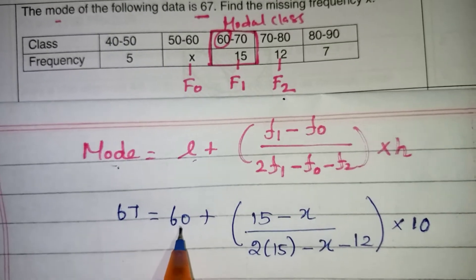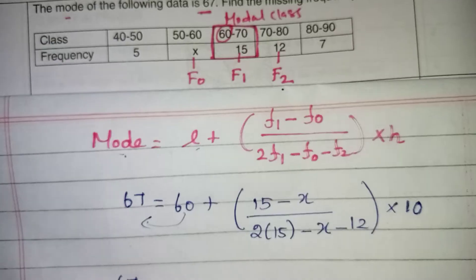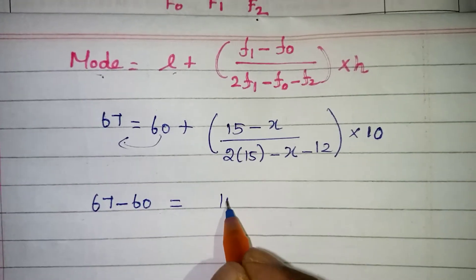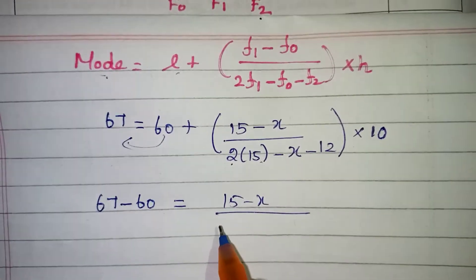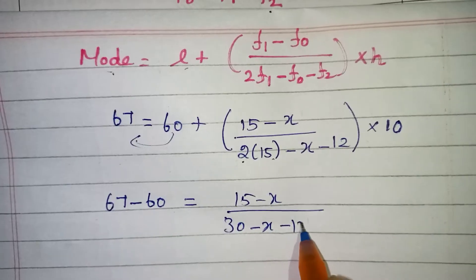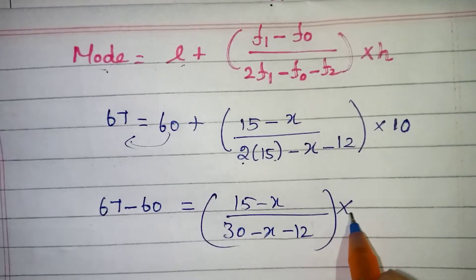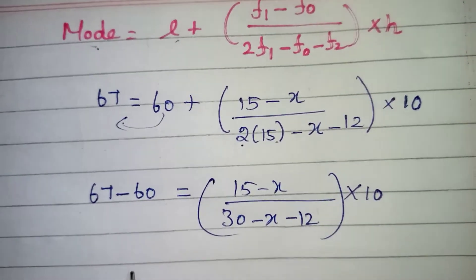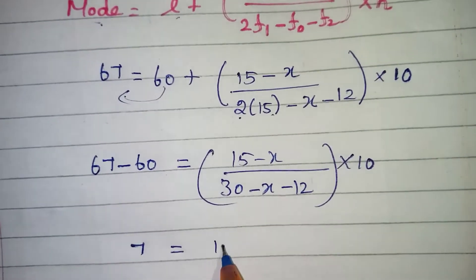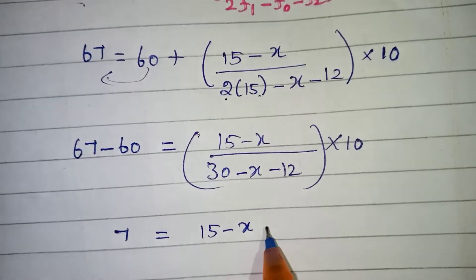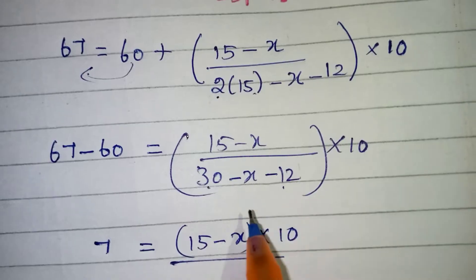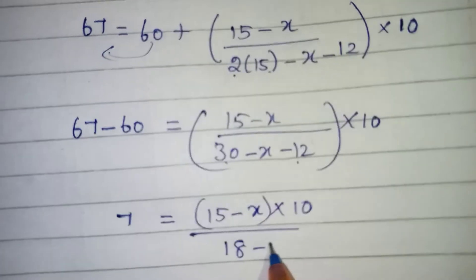Now the plus 60 we have to bring it to this side. So that will become minus. 67 minus 60 is equal to 15 minus X by 2 into 15 will be 30 minus X minus 12 and overall this is multiplied by 10. Now 67 minus 60 will give you 7 which is equal to 15 minus X multiplied by 10 here and the denominator is 30 minus 12 will give you 18 minus X.